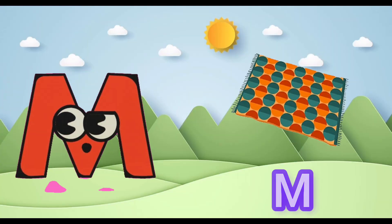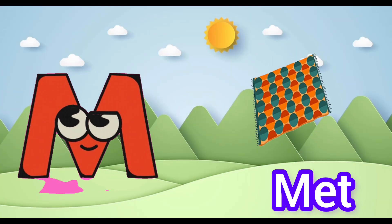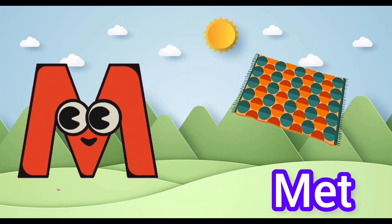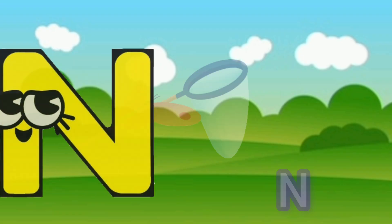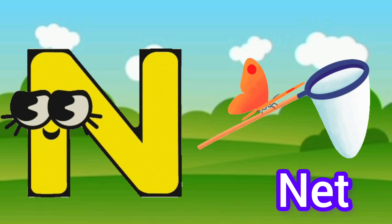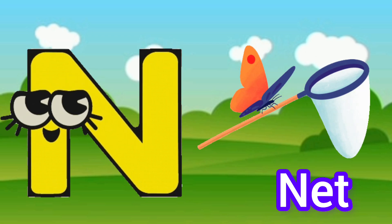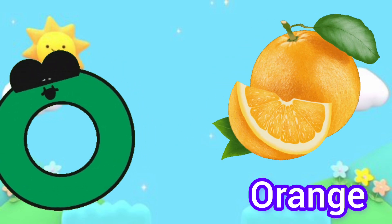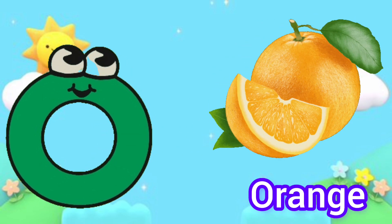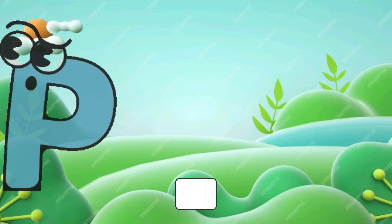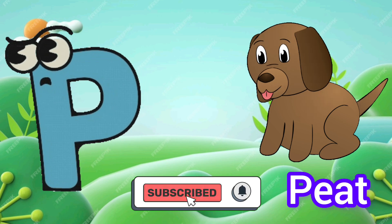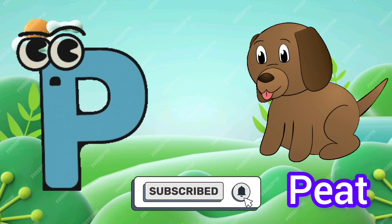M is for mat, m-m-mat. N is for net, n-n-net. O is for orange, o-o-orange. P is for pet, p-p-pet.